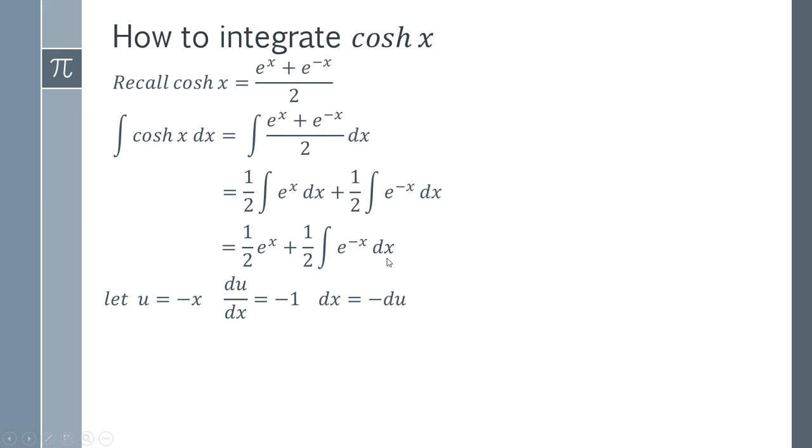You also have to keep track of this dx. Take the derivative of u, which gives us du dx equals minus 1. The derivative of minus x is of course minus 1. Rearrange that to get an expression of dx. We find that dx is minus du. We can replace minus x with u and dx with minus du.